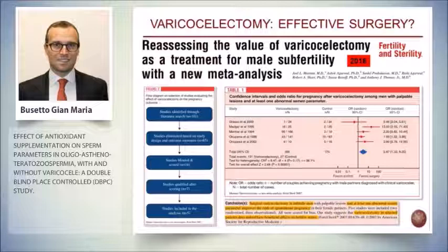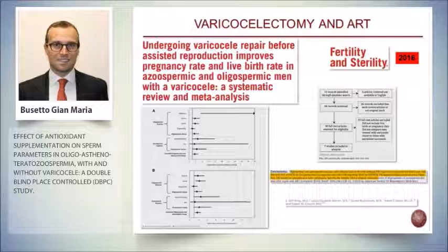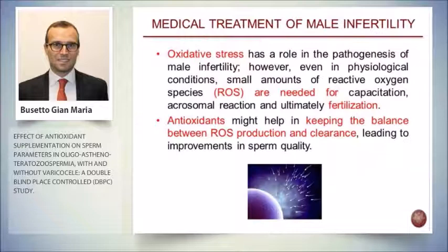One of the latest meta-analyses on pregnancy rate — which is the most important parameter to evaluate treatment success — considered over 100 papers; after exclusion, five papers remained. The meta-analysis of these five papers favors treatment, because pregnancy rate increased in a statistically significant way. Furthermore, considering pregnancy rate and live birth rate in patients undergoing ART, if the patient is first treated for varicocele, there is also an increase in pregnancy rate and live birth in couples doing ART.